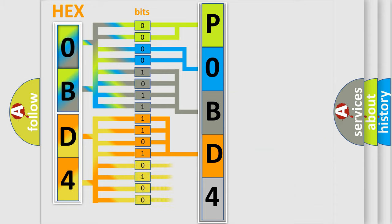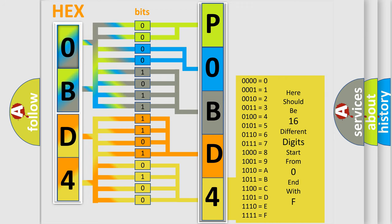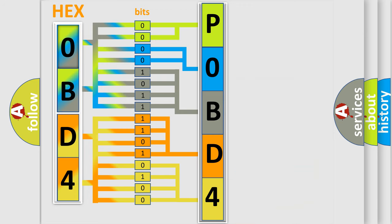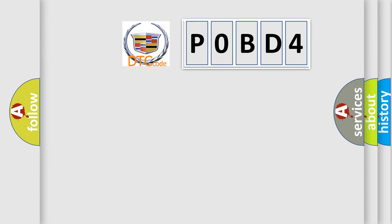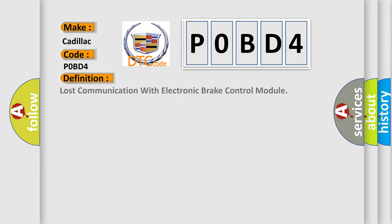A single byte conceals 256 possible combinations. We now know in what way the diagnostic tool translates the received information into a more comprehensible format. The number itself does not make sense to us if we cannot assign information about what it actually expresses. So, what does the diagnostic trouble code P0BD4 interpret specifically for Cadillac car manufacturers? The basic definition is: lost communication with electronic brake control module.